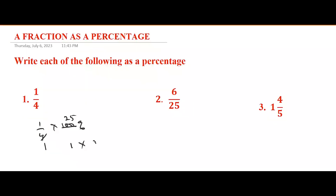Four goes into four once, four goes into 100 twenty-five times, so that gives 1 × 25 = 25 percent. So one out of four as a percentage is 25 percent.